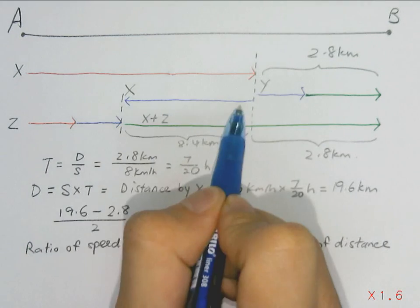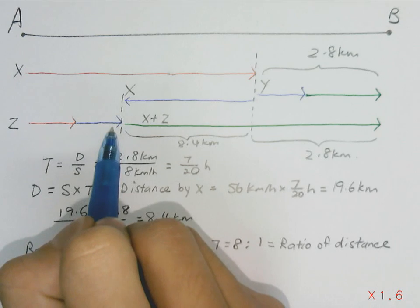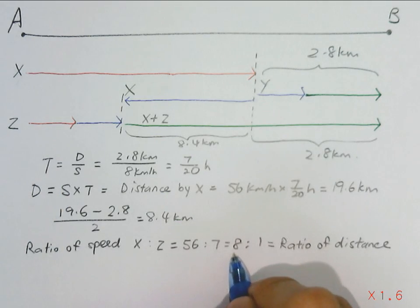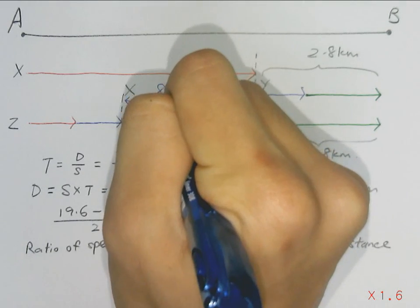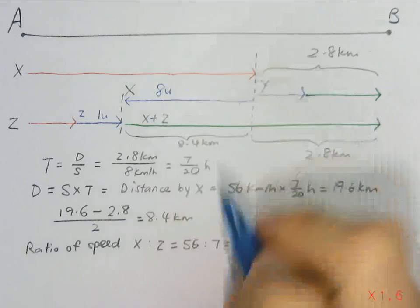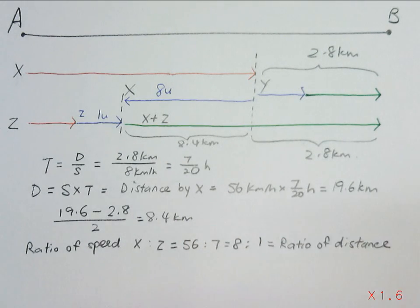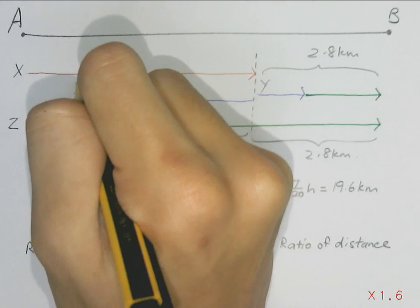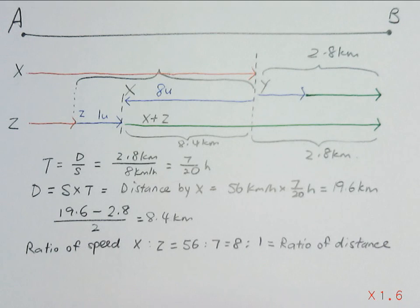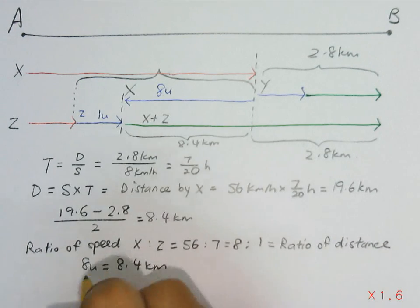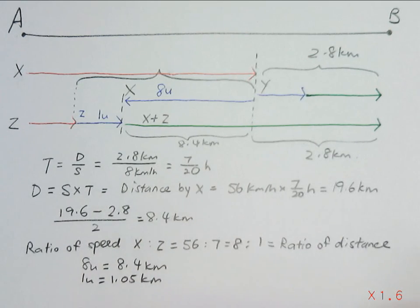Now looking at this blue arrow and this blue arrow, they actually have the same time taken as well. So this blue arrow is moved by X. So we will use 8 units to represent this distance. So we can now calculate this total distance, which is 9 units. So 8 units is 8.4 km. 1 unit would be 1.05, and 9 units would be 9.45 km.